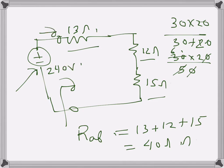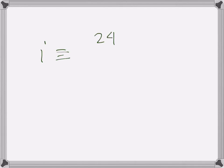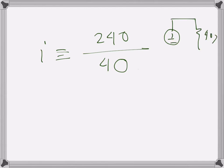Now we need to find the current as well, and that's pretty simple. The circuit reduces to just 40 ohms and 240 volts, so the current will be 240 over 40, which is 6 amps. That's the current.